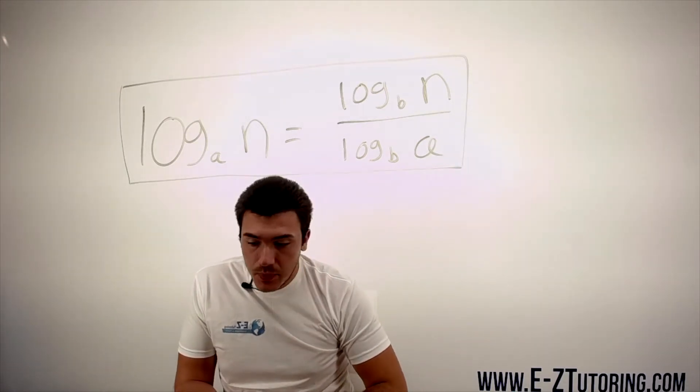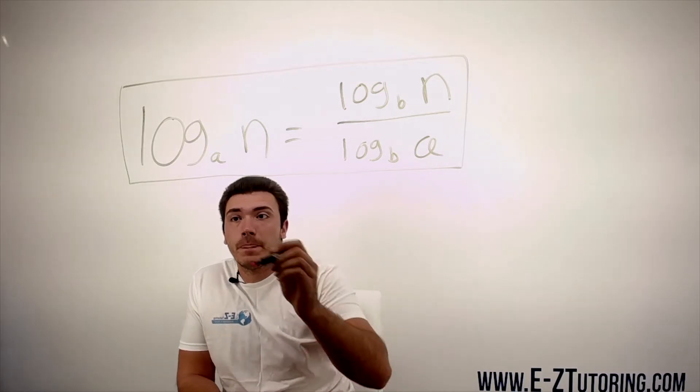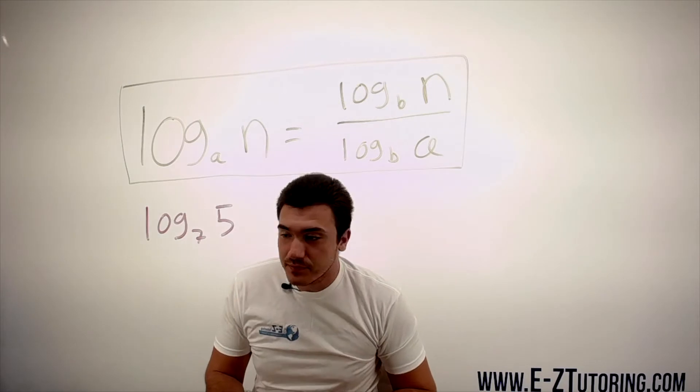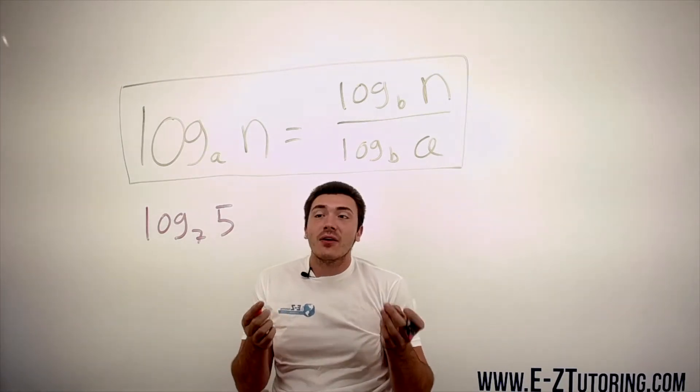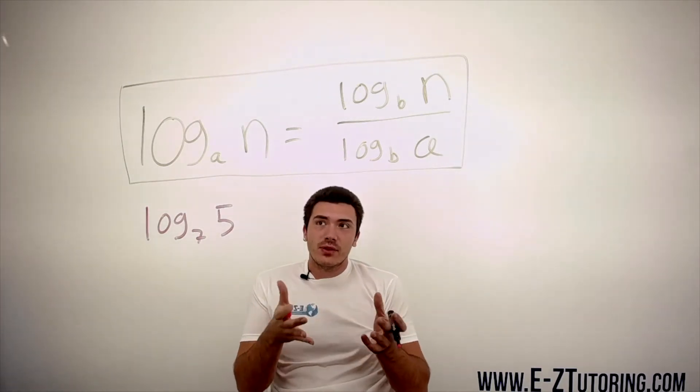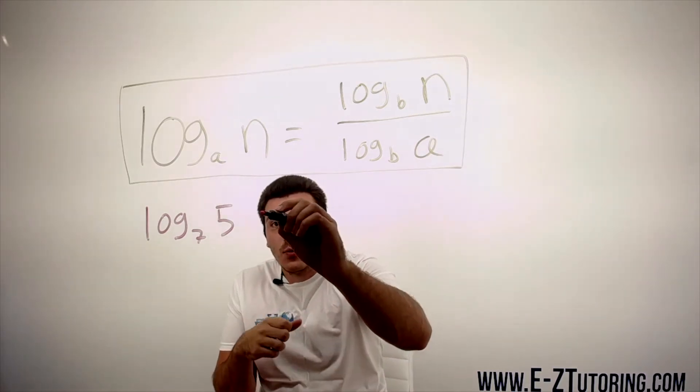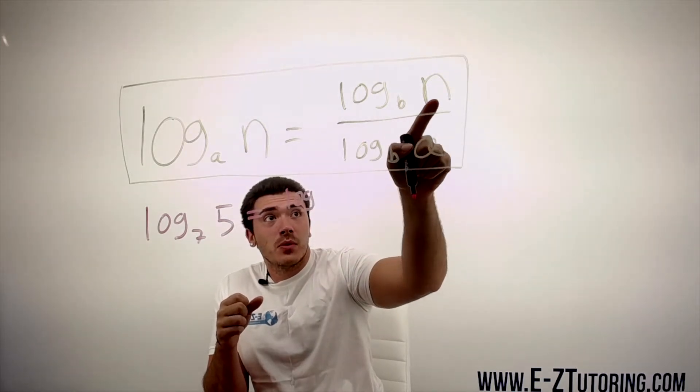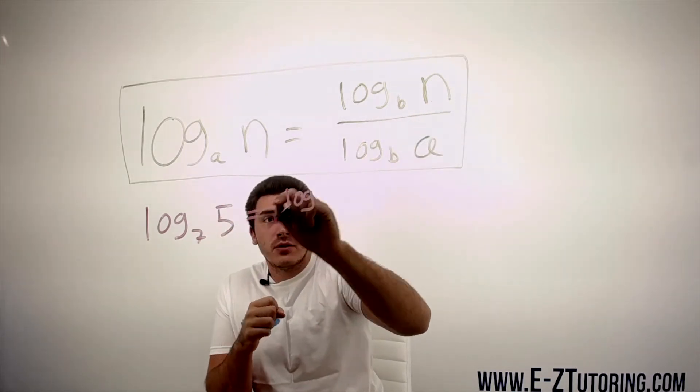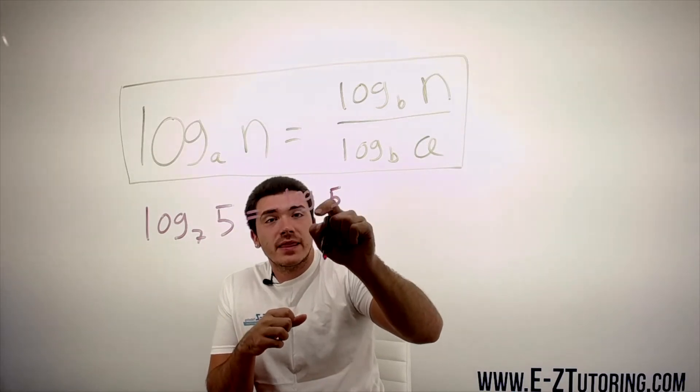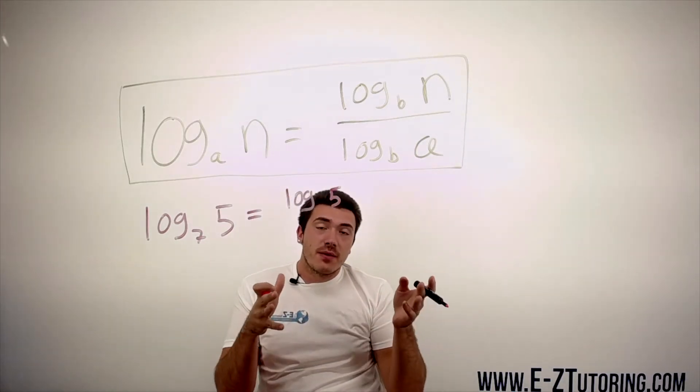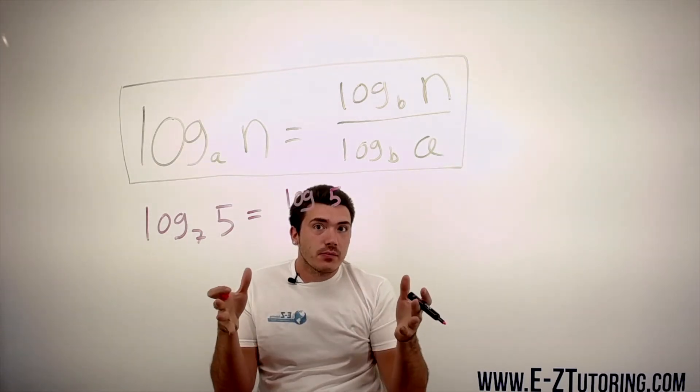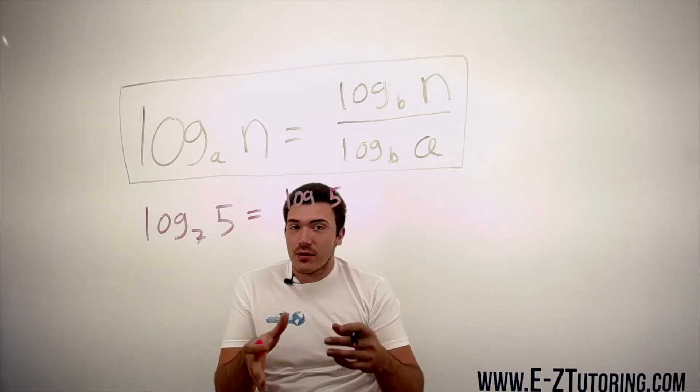So suppose we have log base 7 of 5. This is hard to plug into a calculator. You have base 7 and you can't really do anything with that. So we rewrite it as log of—and remember we choose n, which is this number right here, 5—and the base is 10, but I don't need to write 10 because any logarithm that is base 10 is just log. It's the standard log and you don't have to write base 10.